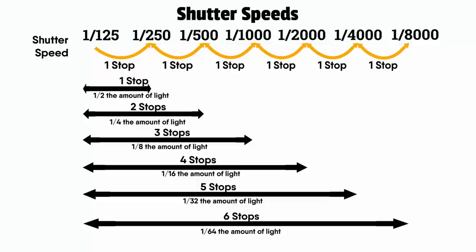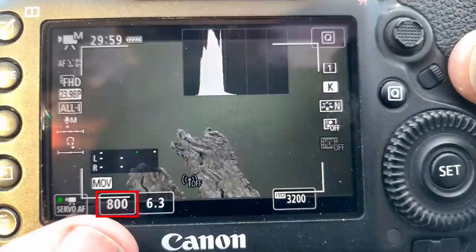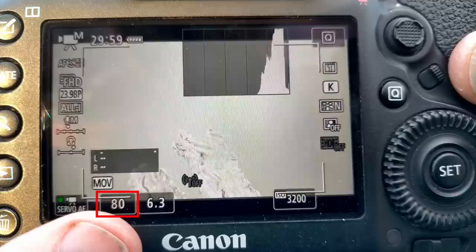Back to stops of light — shutter speeds are fairly simple to understand. One stop is basically doubling your shutter speed: 1/25, 1/250, 1/500, 1/1000, and so on. At each stop we're halving the amount of light hitting the sensor. As we increase our shutter speed the scene gets darker because less light hits the sensor. As we lower our shutter speed the shutter is open longer and we get more light, so the scene gets brighter.